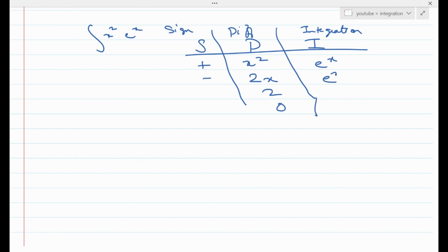Similarly, we will integrate it till we reach this 0 term on the left hand side. So e to the power x is just e to the power x all the way and now we are going to alternate the signs between plus and minus.